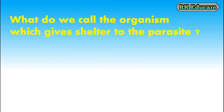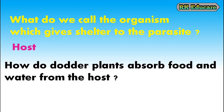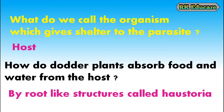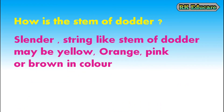What do we call the organism which gives shelter to the parasite? An organism which gives shelter to the parasite is called a host. How do Dodder plants absorb food and water from the host? Dodder plants absorb food and water from the host plant by root-like structures called haustoria. How is the stem of Dodder? The stem of Dodder is slender and string-like. The stem is yellow, orange, pink or brown in color.